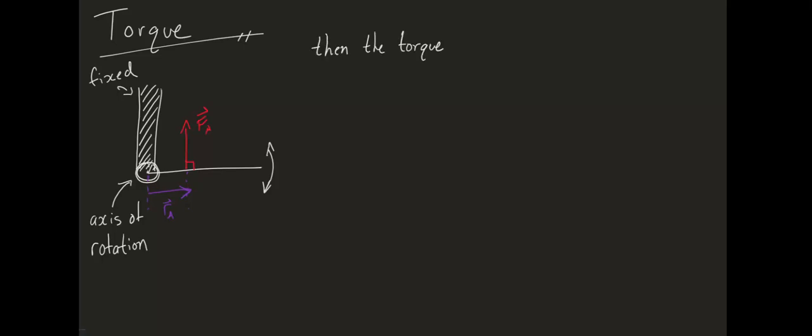Then, the torque on the lever, denoted by the Greek letter tau, is the product of FA and RA. One important note here is that this is only true if the applied force is perpendicular to RA.